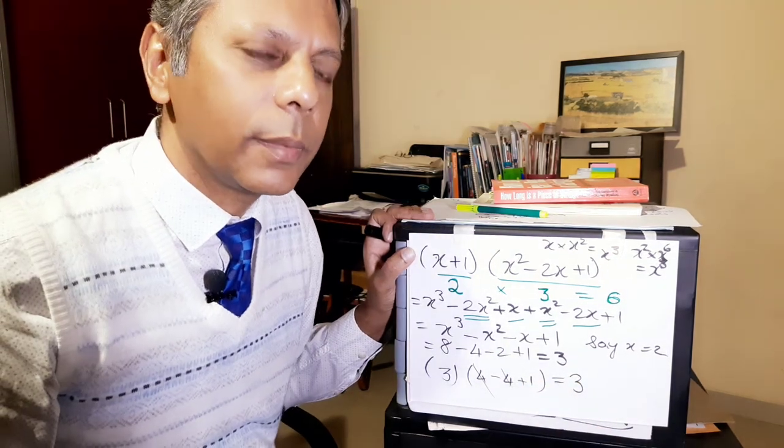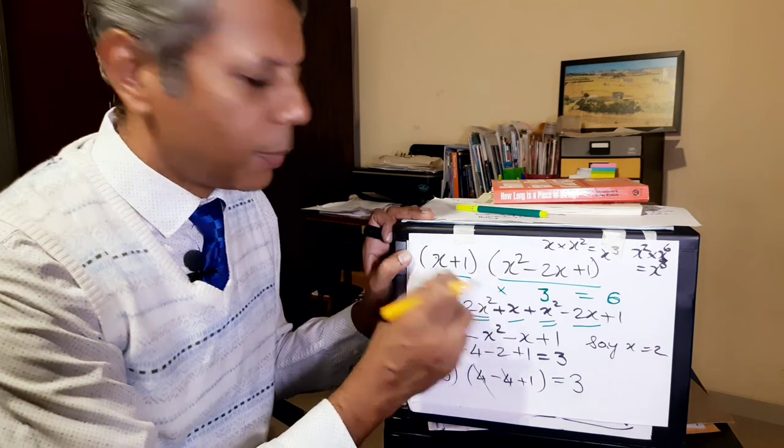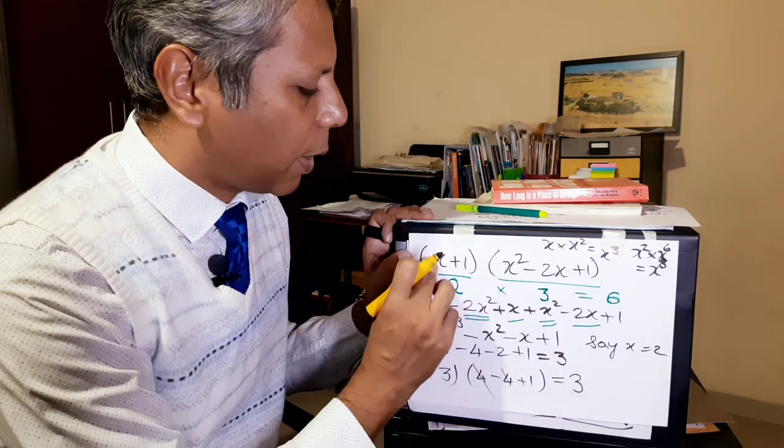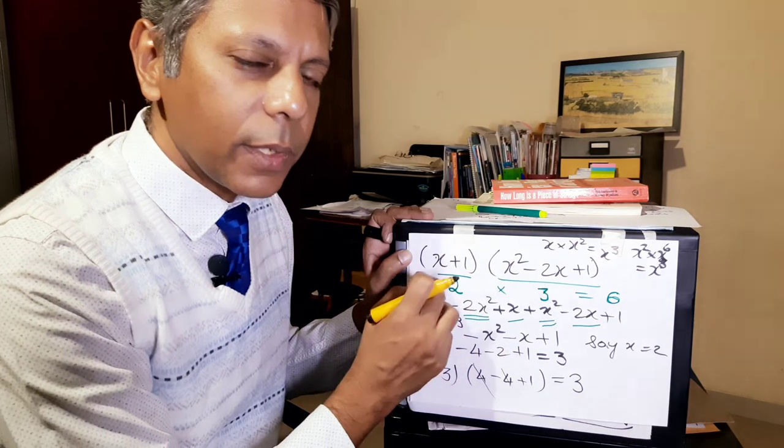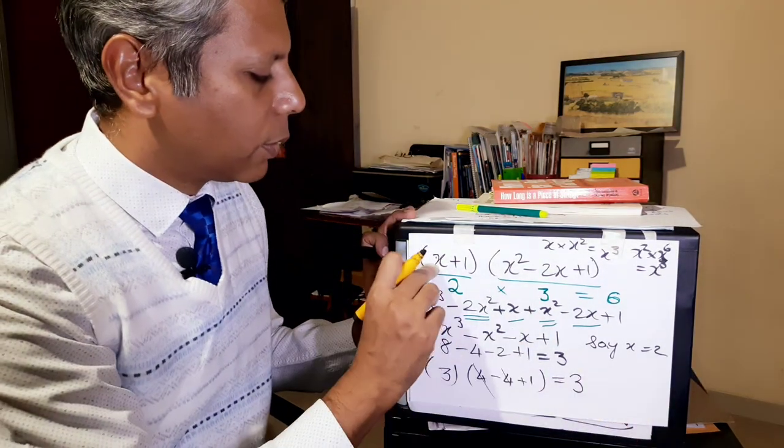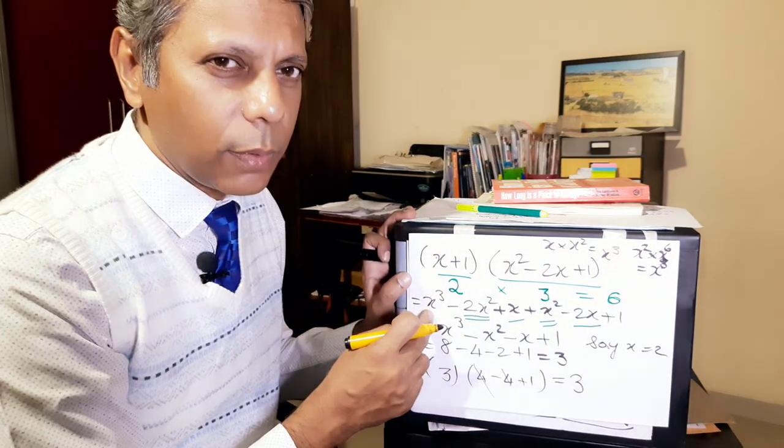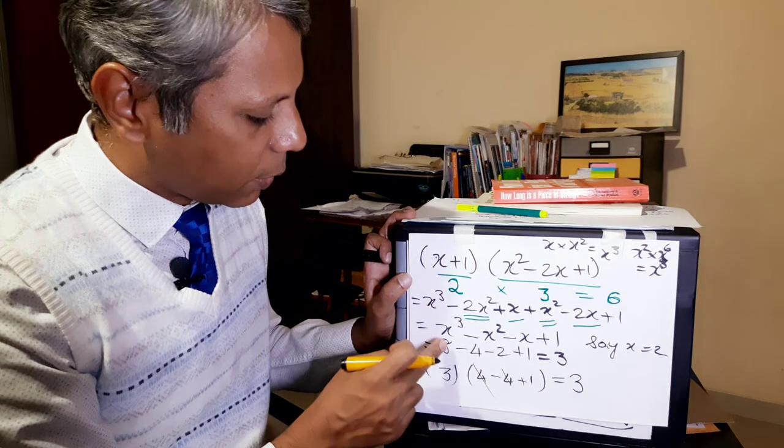So that was nice and easy. We could see that the highest power is x cubed, because the multiple of the highest powers on both expressions will be the highest power after multiplying. So x into x squared would be x cubed, so we need to see some x cubed here, and we do, so that's good.